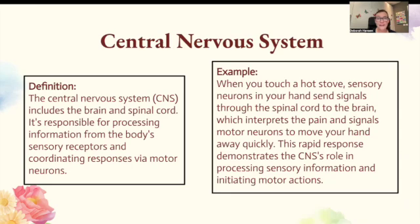The central nervous system (the CNS) includes the brain and spinal cord. It's responsible for processing information from the body's sensory receptors and coordinating responses via motor neurons. For example, when you touch a hot stove, sensory neurons in your hand send signals through the spinal cord to the brain, which interprets the pain and signals the motor neurons to move your hand away quickly. This rapid response demonstrates the CNS's role in processing sensory information and initiating motor action.